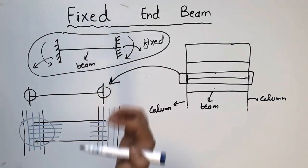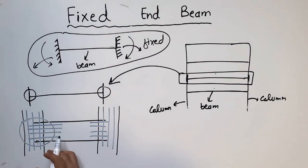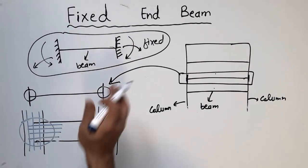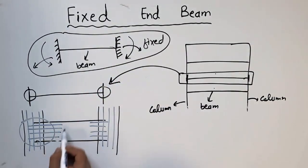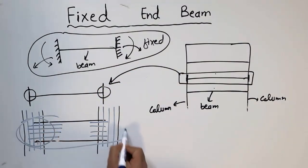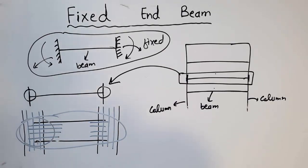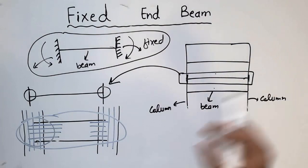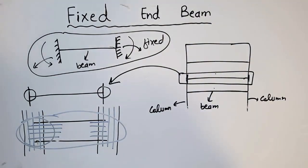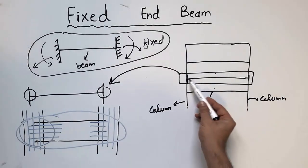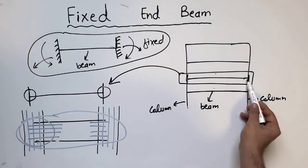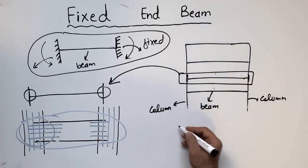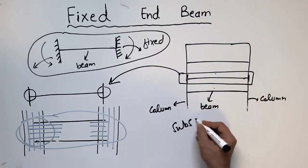Due to this fixed support, it can resist horizontal force, vertical force, and moment, which is why we call this type of support a fixed support. This beam now acts as a fixed ended beam or fixed supported beam, in which the columns are on either side acting as fixed joints. The beam is placed horizontally and injected into the columns inside. For more videos, please subscribe to my channel — thank you for watching.